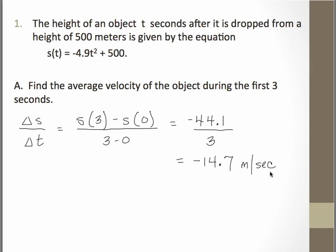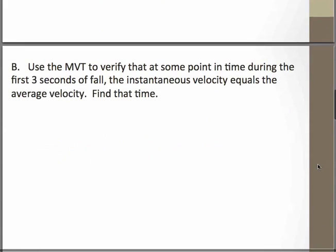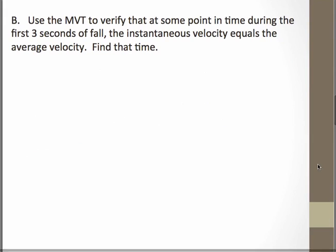Remember what it means when we have a negative velocity in this case, that tells us that the object is going downward, which makes sense because we know this object was dropped from a height of 500 meters. So what we're asked to do in the second part is to use the mean value theorem to verify that there's going to be some point in time during those first three seconds where the instantaneous velocity is going to equal that average velocity we just found.